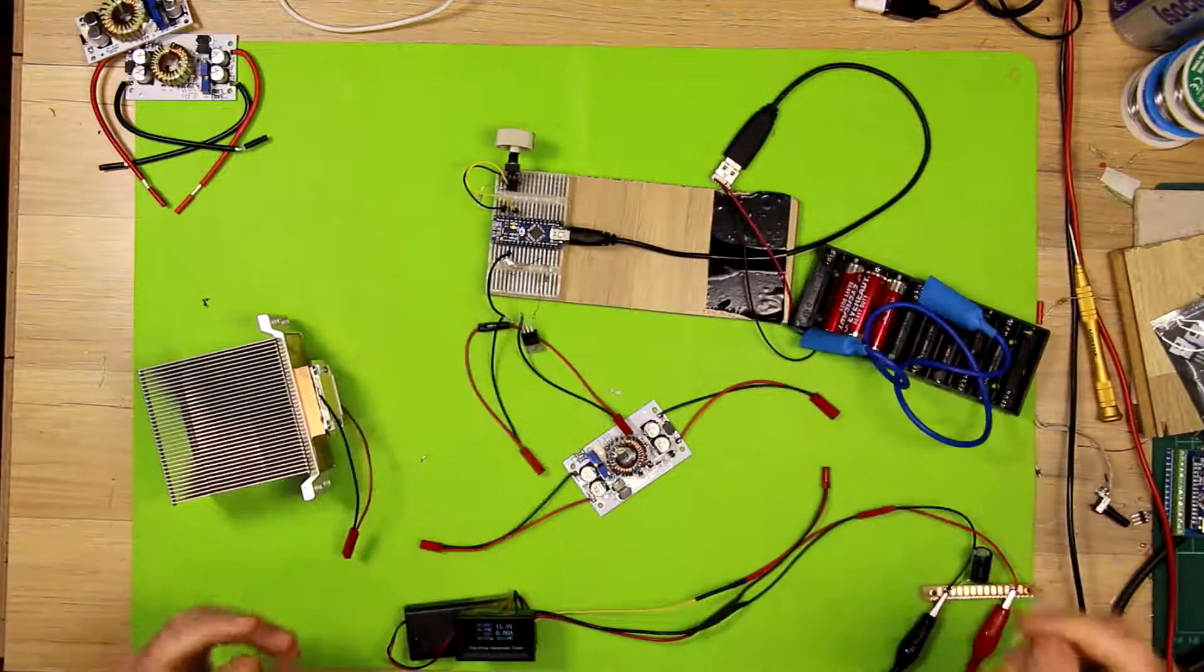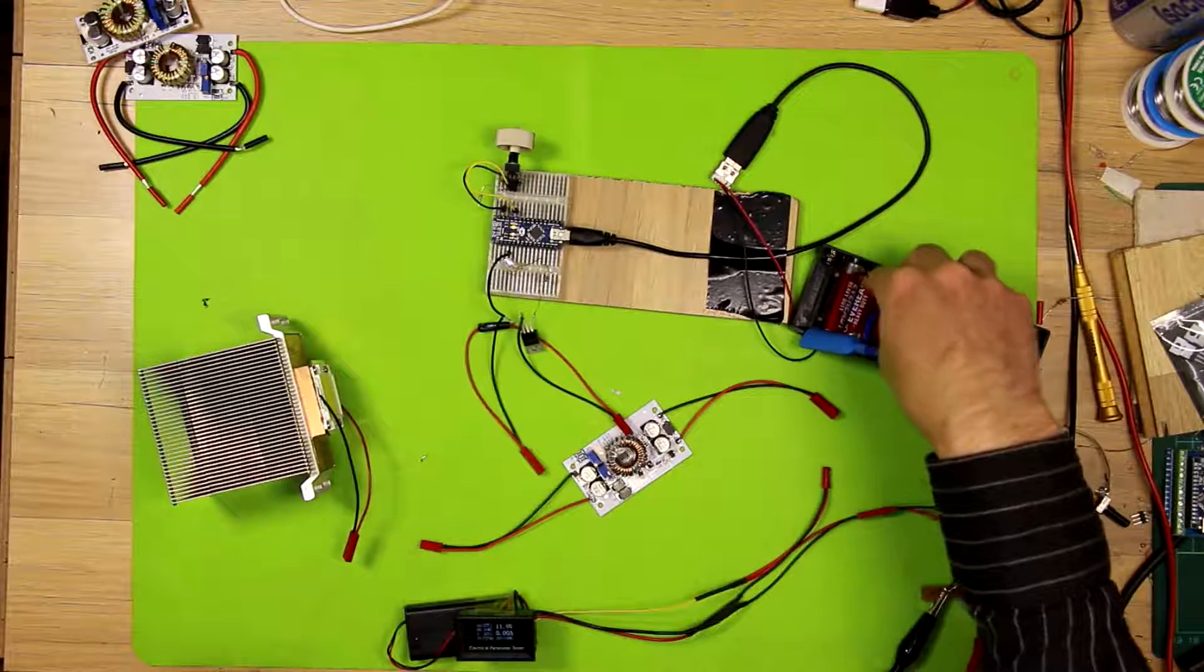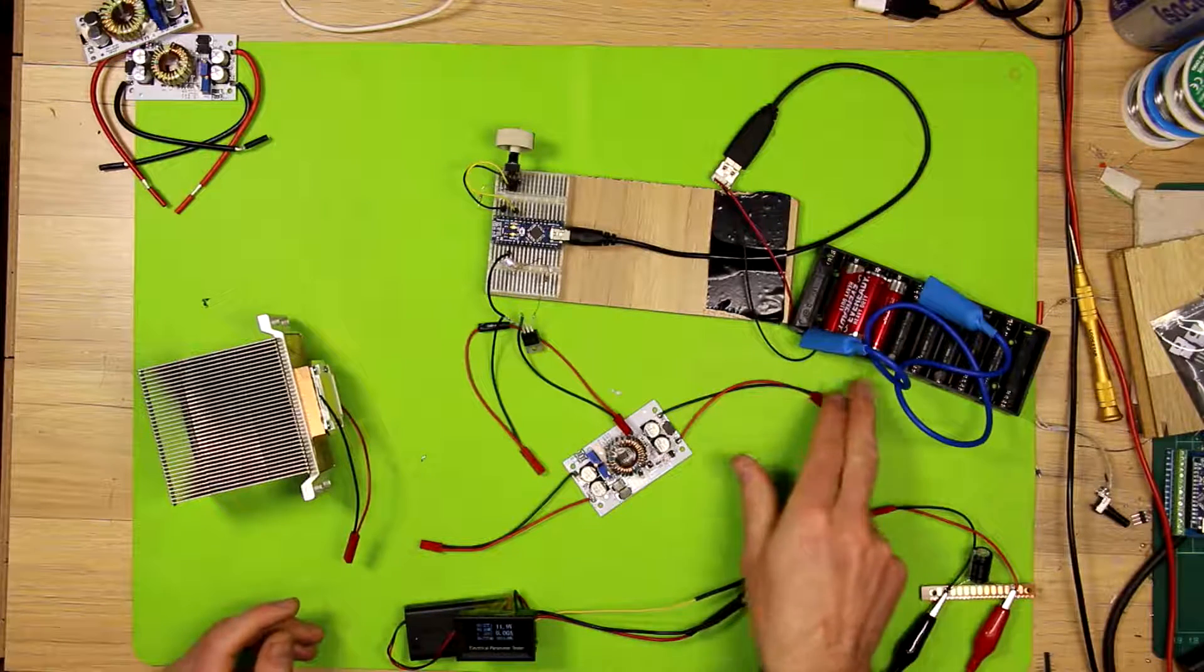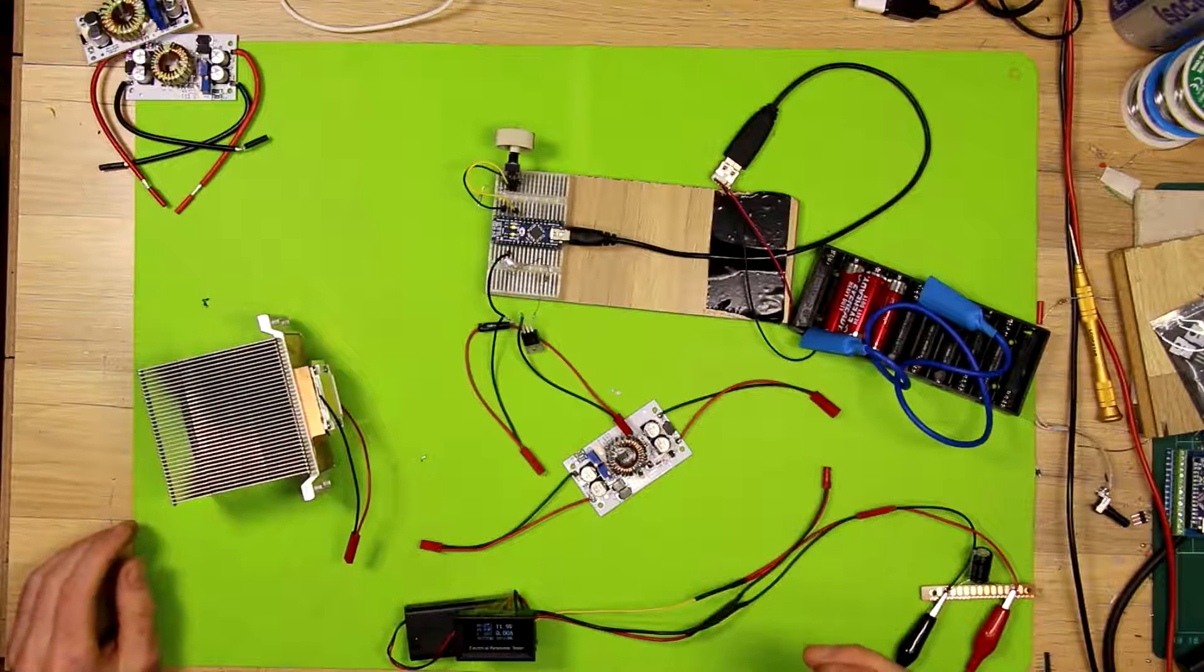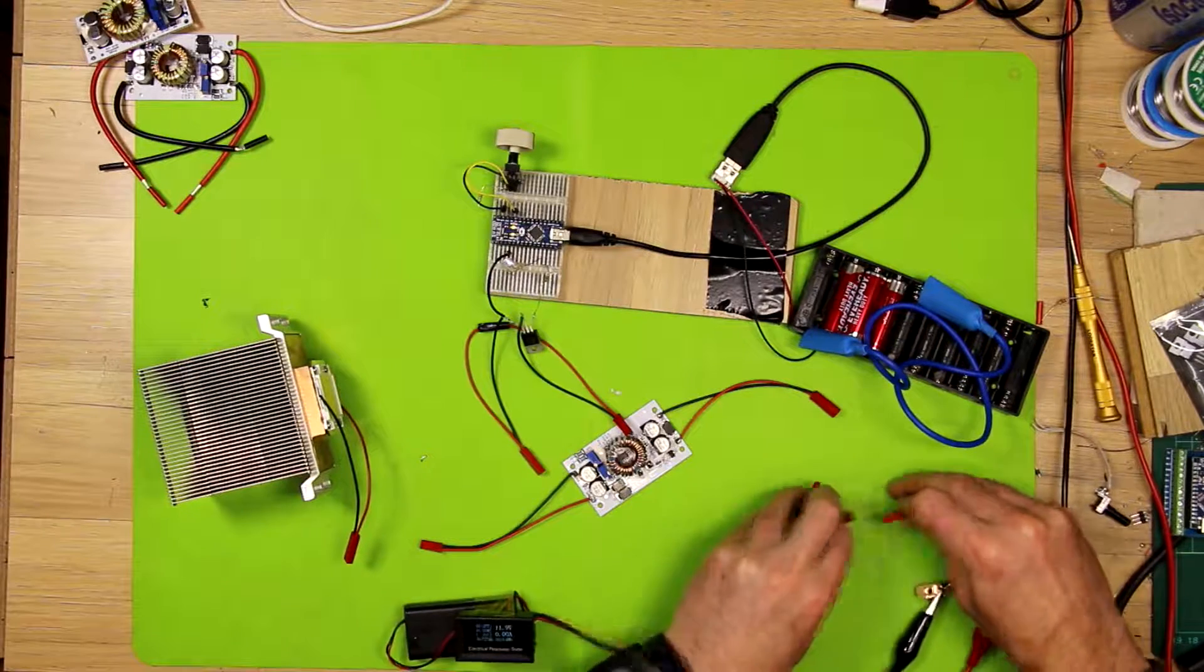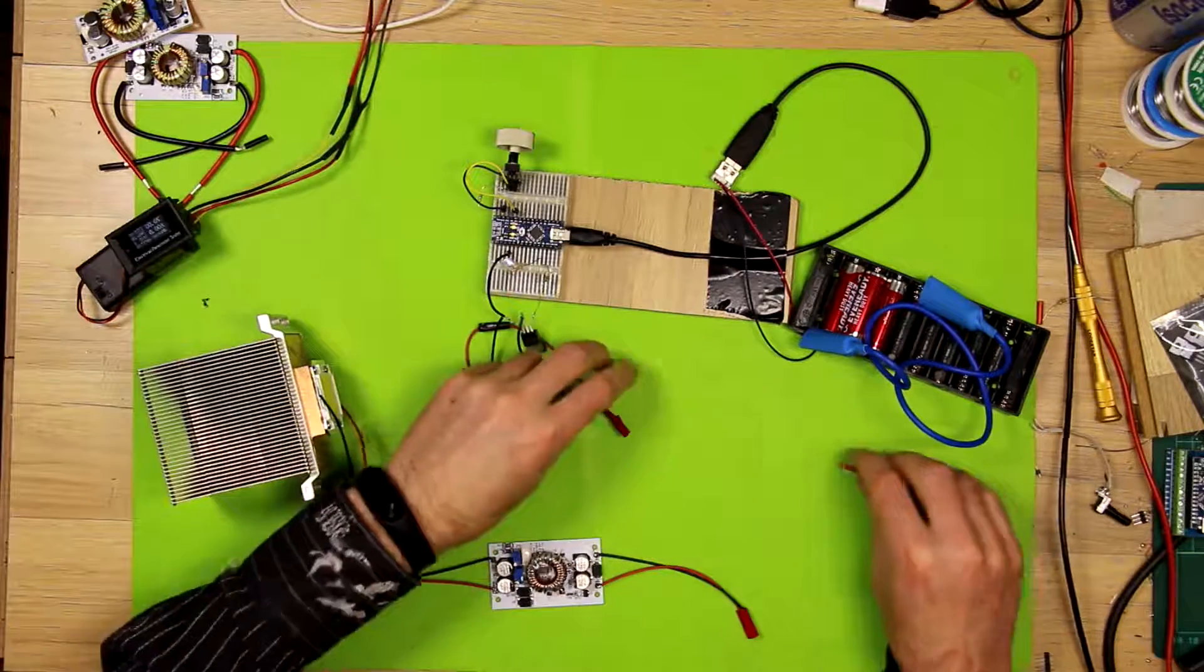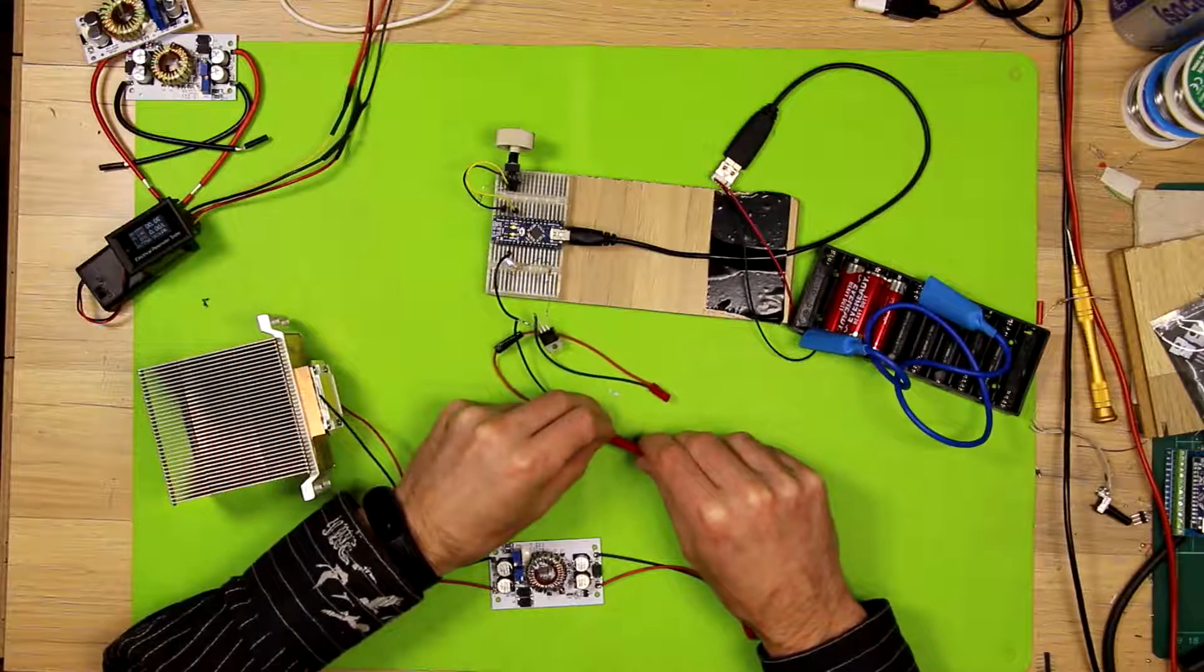And from picking it up, it's mildly warm. So I think 50 watts at about 5 amps, half the rating, is a good current to run these modules at.